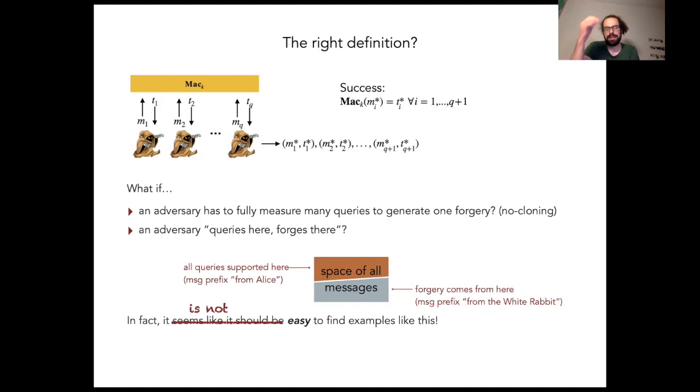It turns out that that is not that easy, however. One of the reasons is that, for example, this period-finding attacker that we talked about doesn't work to show this. This is because if a quantum measurement succeeds with good probability, then the disturbance is also limited. So in this period-finding example, the adversary makes a measurement to determine the period. But afterwards, because that succeeds with good probability, they can still rewind their computation and recover a message tag pair from their query.